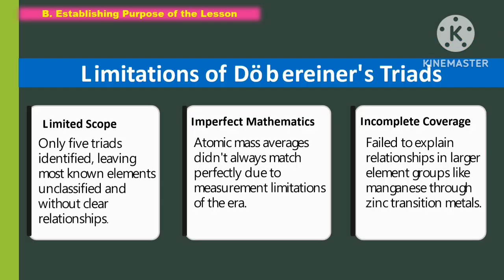The limitations of Dobereiner's Triads include: first, limited scope — only five triads were identified, leaving most known elements unclassified and without clear relationships; second, imperfect mathematics — atomic mass averages did not always match perfectly due to measurement limitations of the era; and third, incomplete coverage — it failed to explain relationships in larger element groups like manganese through zinc transition metals.